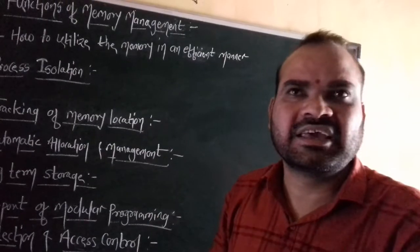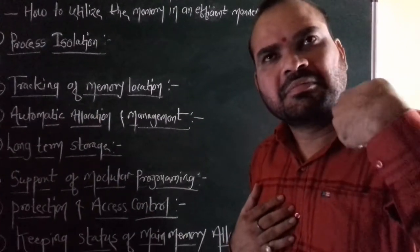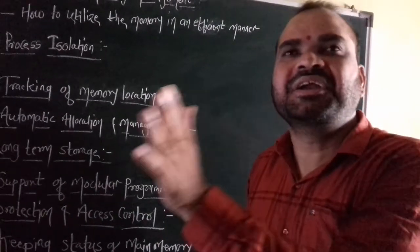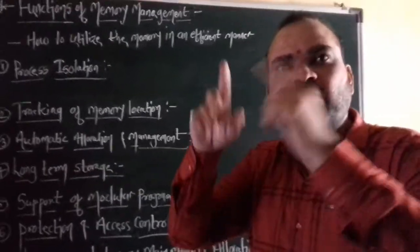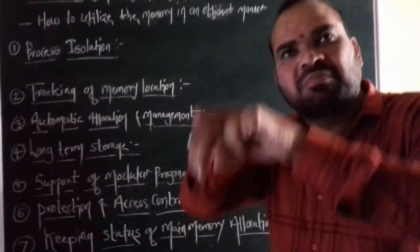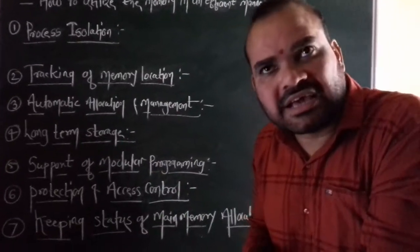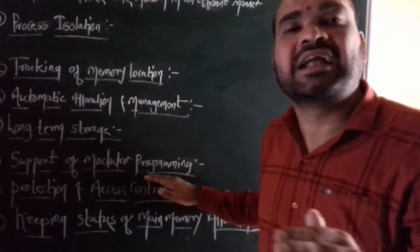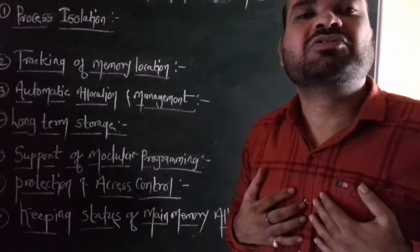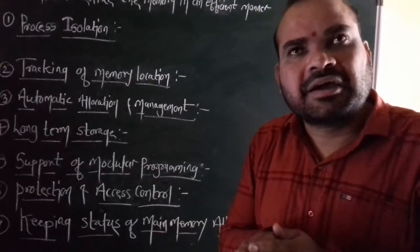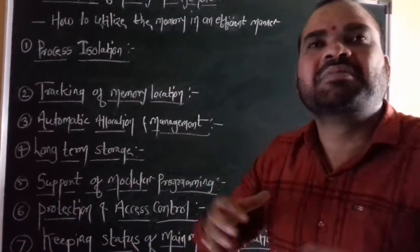When the process is terminated or closed, memory is reduced. Now the next point is support of modular programming. Support of modular programming means that in the machine there are a number of processes and programs entered. When the process or program is of a big size, memory allocation for the entire big program is not possible. That particular big program is divided into a number of parts.